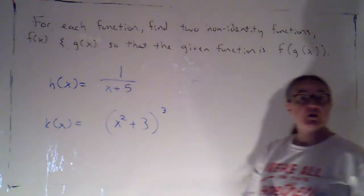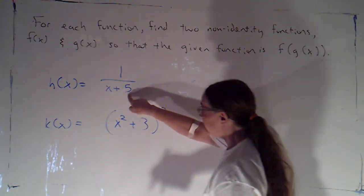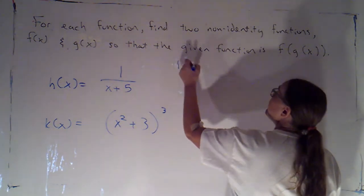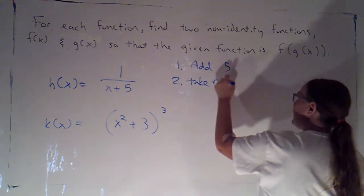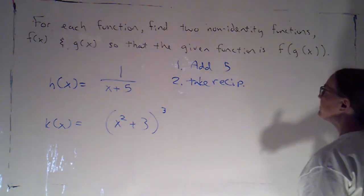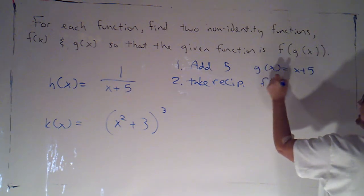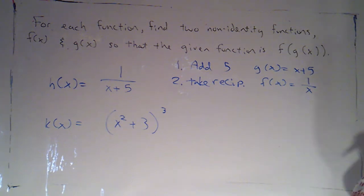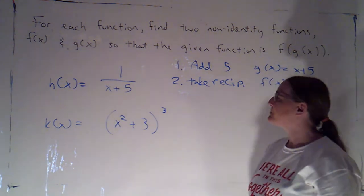For h of x, it looks like I'm doing two things. I'm adding 5, and I'm taking the reciprocal. And, since the 5 is in the denominator, I've got to make sure that I add the 5 first, and then take the reciprocal, so that I'm taking the reciprocal not just of x, but of the whole thing, the result of adding 5 to x. So, I would let g of x be x plus 5, and f of x would be the reciprocal function. Once I plug in g of x to f, the thing I'll be taking the reciprocal of will be x plus 5.